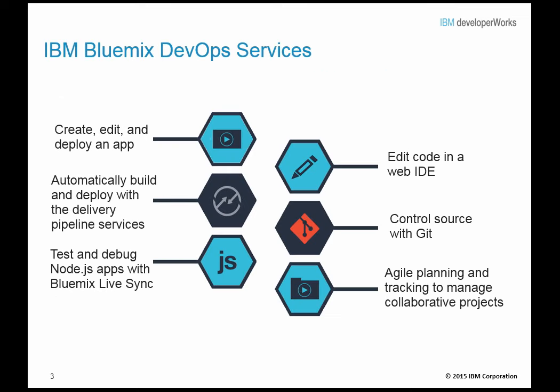IBM Bluemix DevOps Services is a software-as-a-service on the cloud that supports continuous delivery. With Bluemix DevOps Services, you can develop, track, plan, and deploy software all in one place. From your projects, you can access everything that you need to build all types of apps. To simplify teamwork, use the collaboration tools. After you build an app, you can deploy it to the IBM Bluemix Cloud Platform. You can go from source code to a running app in minutes.